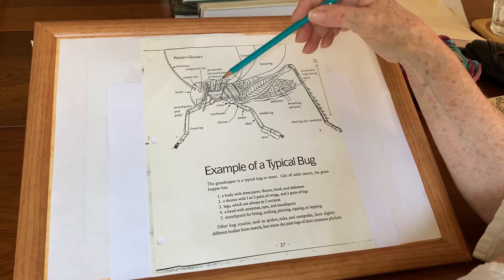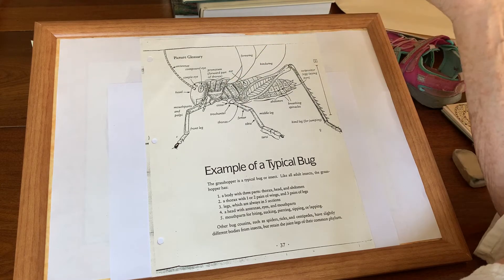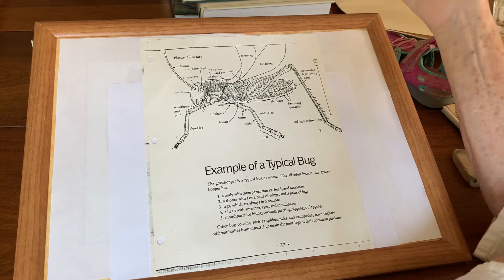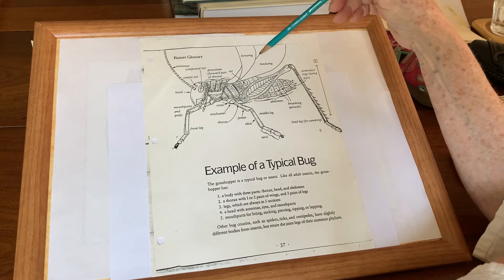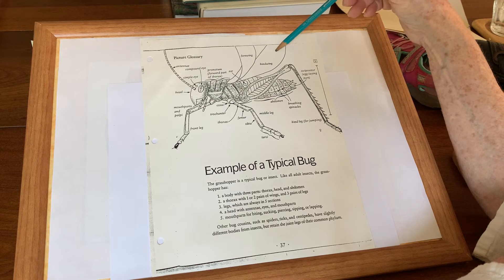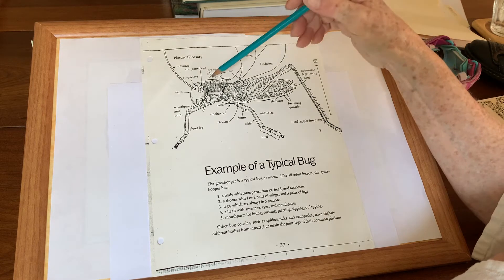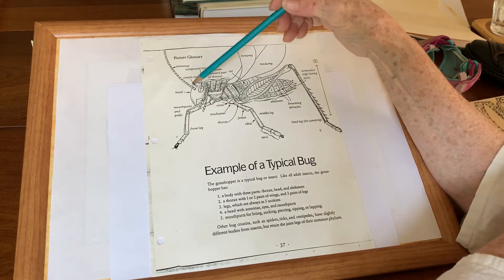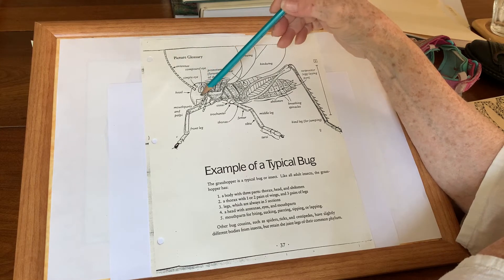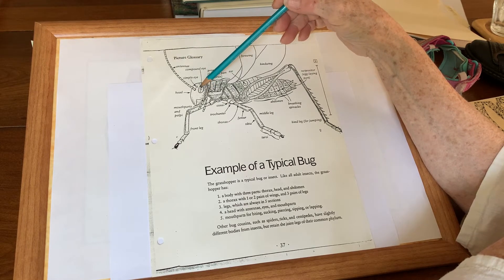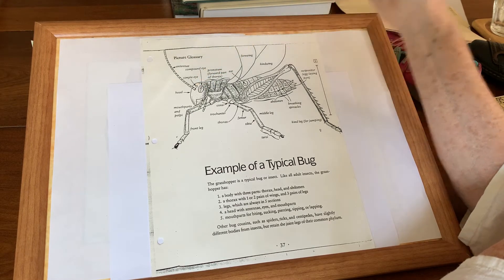An insect can have two pairs of wings. It can have a hard outer shell and it can have an inside wing. They often have antennae and compound eyes. Sometimes they also have a simple eye.